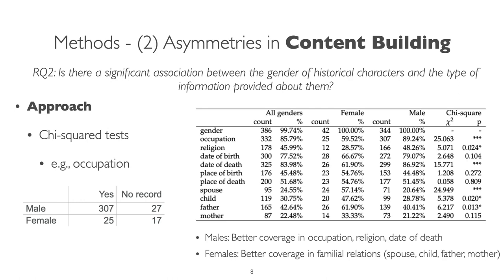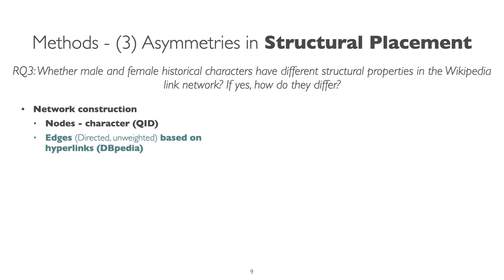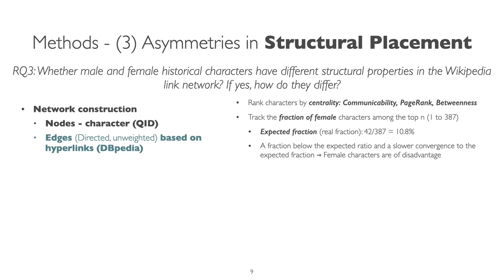For the third question about asymmetries in structural placement, we can only present part of our outcomes here because of limited time. We constructed a hyperlink network with each node representing a character, and then we ranked the characters by three measures of centrality: communicability, page rank, and betweenness. We tracked the fraction of female characters among the top n — from the top one to the full group — and then we see how quickly this fraction of females converges to the expected ratio, which is the actual female fraction within the whole group.